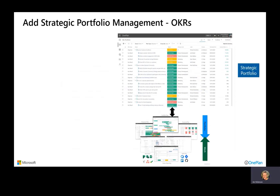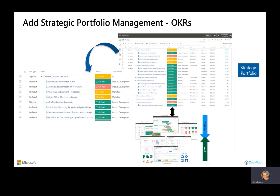On top of that, you can also add strategic portfolio management with objectives and key results, layering that on top of the overall project portfolio — not only executing on your strategies but also aligning your project portfolio with those strategies to make sure you're working on the right things that align with the objectives of the organization.